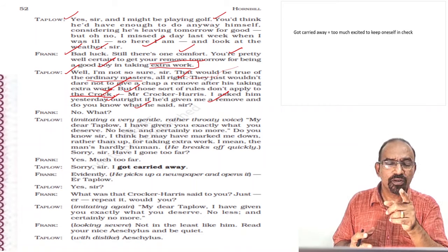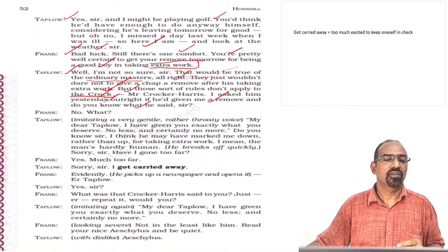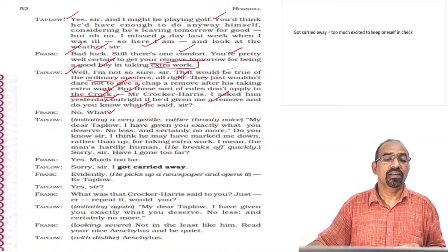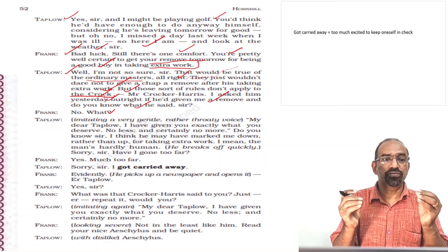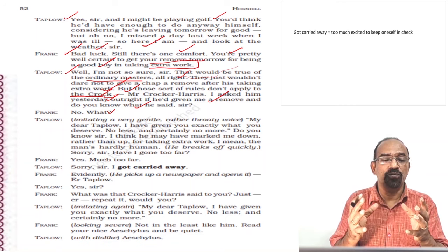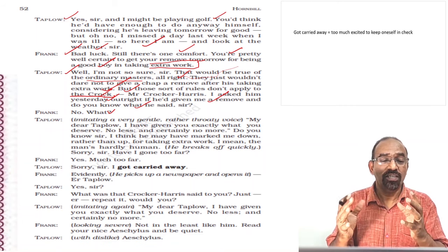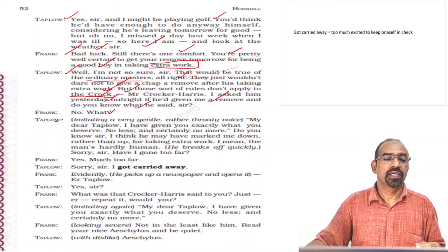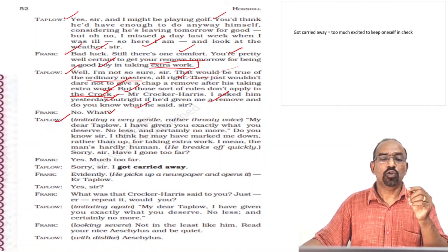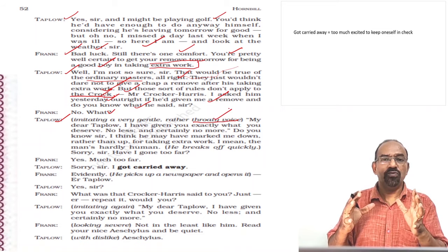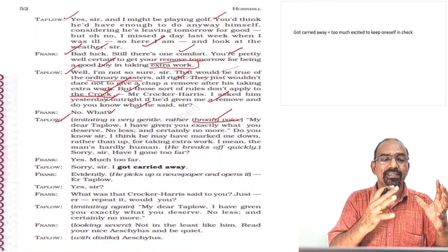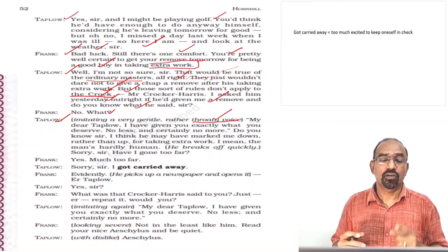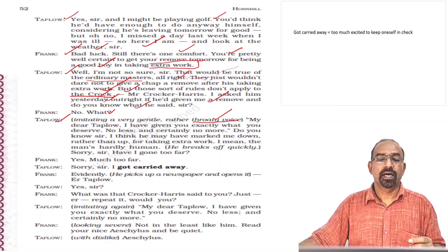Now the door is pushed open and Millie Crocker-Harris enters — the third character in the drama, Crocker-Harris's wife. She is a thin woman in her late 30s, rather more smartly dressed than the general run of schoolmasters' wives, wearing a cape and carrying a shopping basket. She closes the door and stands by the screen watching Taplow and Frank for a few seconds before they notice her.